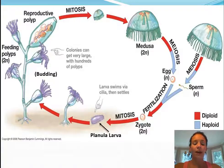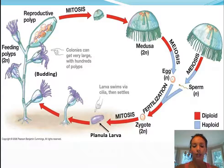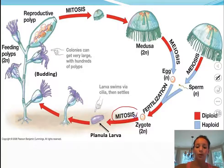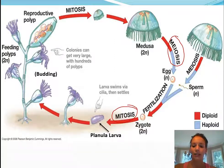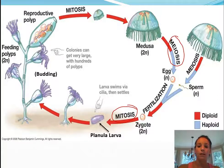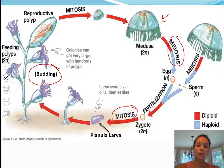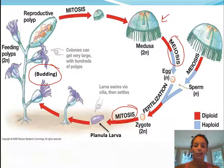This is the final slide and you need to pause here and sketch this out — it's the most important diagram in this video. Pay special attention to the terms mitosis and meiosis, which is where sexual fertilization is occurring. You can see we start with a polyp and then progress to a medusa. Budding, the asexual form of reproduction, is also shown on the left. Go ahead and pause the video, sketch this, and then you are done with your notes.